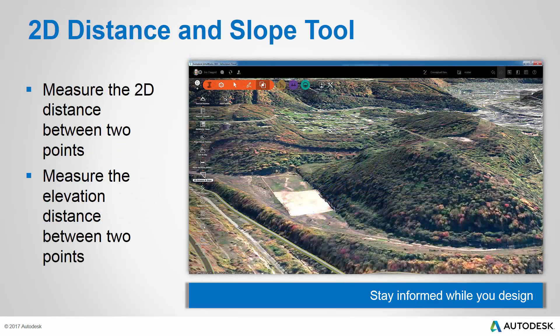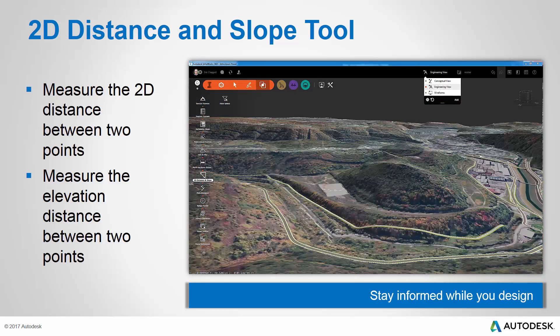A simple but powerful tool in this latest release of InfraWorks 360 is the 2D distance and slope tool. To demonstrate this tool, I'm going to switch to engineering view so that we can see better through the terrain. I'll go ahead and launch the tool, click this low-lying area, and then move my cursor to the top of the hill. Here you can see three pieces of information: the horizontal distance, which in this case is 896.3 feet; the vertical distance of 313.8 feet; and the slope between those two points, 35.01%. A very handy way to analyze the terrain, or perhaps the distance from the top of a bridge to a low-lying area.